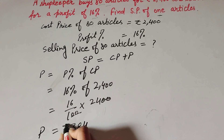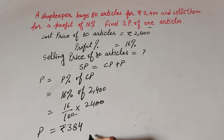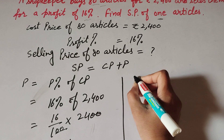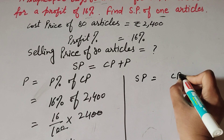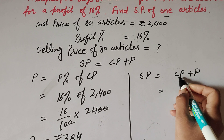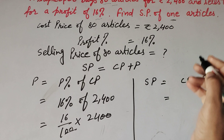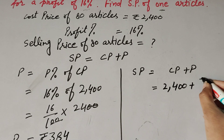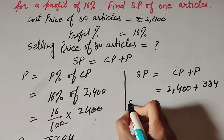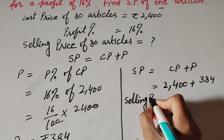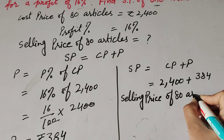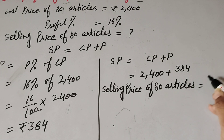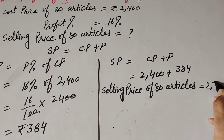So the profit on selling 80 articles is equal to rupees 384. Now we find the selling price of 80 articles. Selling price is equal to cost price plus profit. Cost price is equal to 2400 and profit is equal to 384. So selling price of 80 articles equals 2400 plus 384, which is equal to 2784.